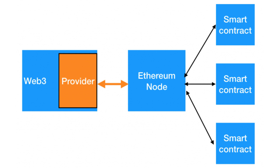When you instantiate Web3, you need to give it a provider object. It is this object that will actually do the communication with the blockchain. In the code of your decentralized application, you will not have to deal directly with this provider — you will only call the methods of Web3, but behind the hood, Web3 will delegate the execution to the provider, which will actually send the API call to the Ethereum blockchain.